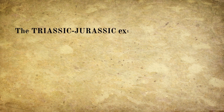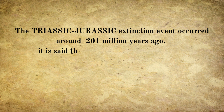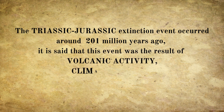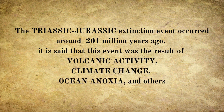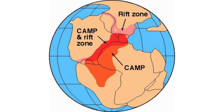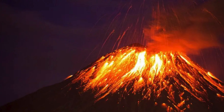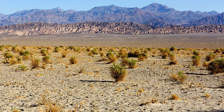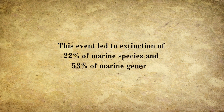The Triassic-Jurassic extinction event occurred around 201 million years ago, marking the boundary between the Triassic and Jurassic periods. It is believed this event was likely the result of volcanic activity, climate change, and ocean anoxia. Enormous volcanic eruptions in the Central Atlantic Magmatic Province released vast amounts of volcanic gases, leading to climate changes such as a rise in global temperature, acid rain, and ocean acidification. The volcanic activity also led to widespread oxygen depletion in marine environments. This event led to the extinction of 22% of marine species and 53% of marine genera.